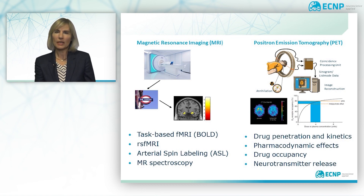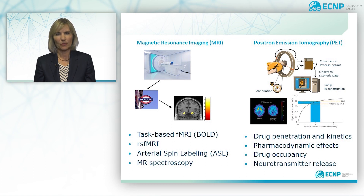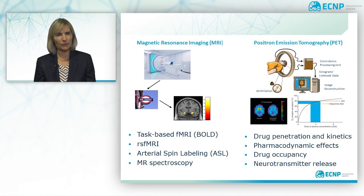Arterial spin labeling represents a semi-quantitative way to quantify regional cerebral blood flow without the need for contrast injections. Instead, the protons in the arterial blood are labeled by radiofrequency pulses, and as the labeled protons are carried with the blood through the brain, you can estimate the regional blood flow value.